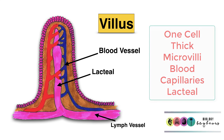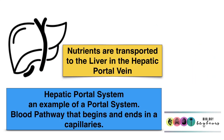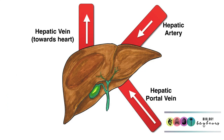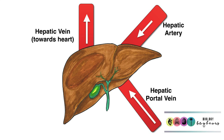The villus itself has several important features: it is only one cell thick, meaning it is very thin-walled, facilitating rapid diffusion. It has microvilli on its surface, further increasing surface area for nutrient absorption. The presence of blood capillaries and the lacteal are also important features. Those blood capillaries link up with the hepatic portal vein, delivering nutrients — particularly monosaccharides and amino acids — to the liver. The hepatic portal vein is an important blood pathway and an example of a portal system, beginning and ending with capillaries.